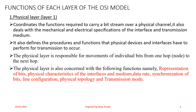Data rate: the transmission rate is the number of bits sent each second at the Physical layer — that is the data transmission rate in kbps or mbps, meaning kilobits per second or megabits per second. The data transmission rate is determined at this layer.